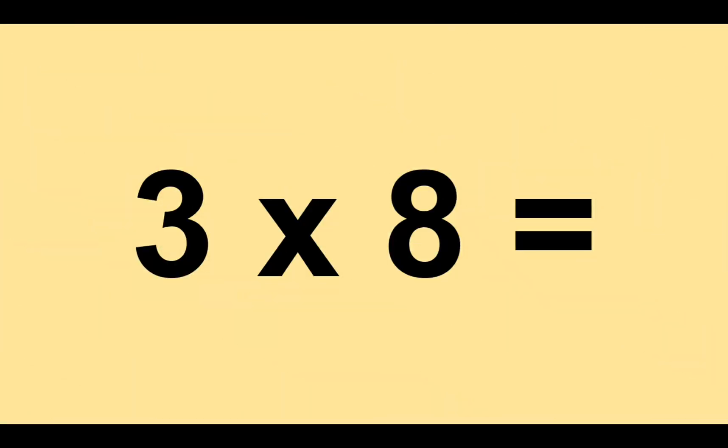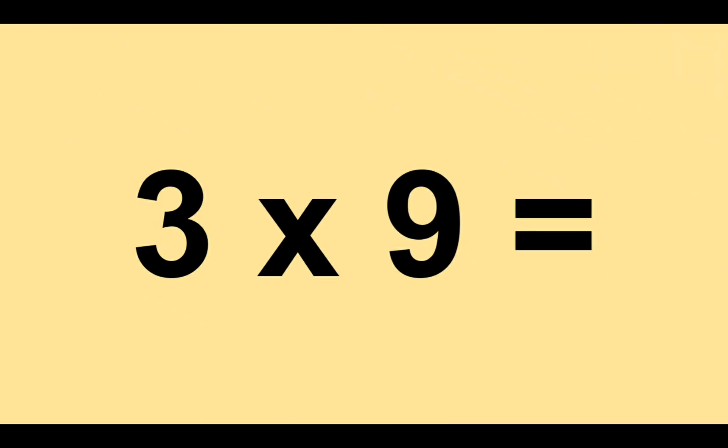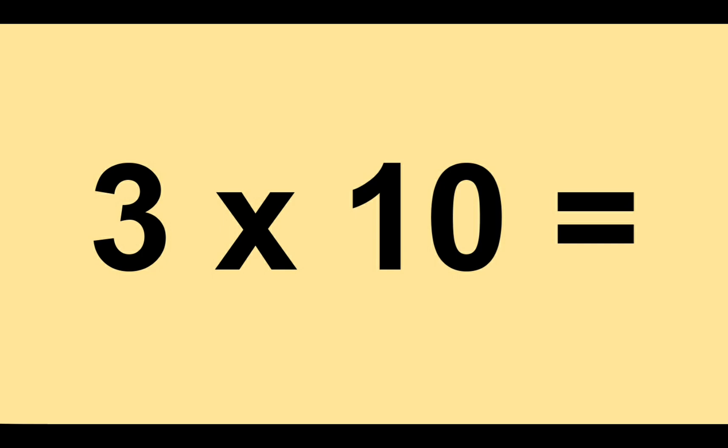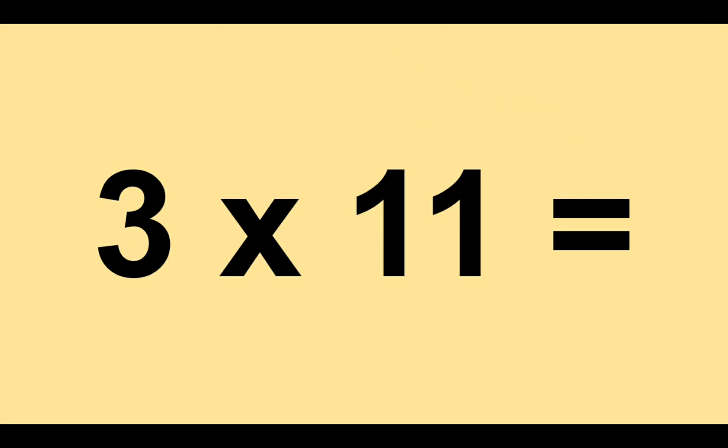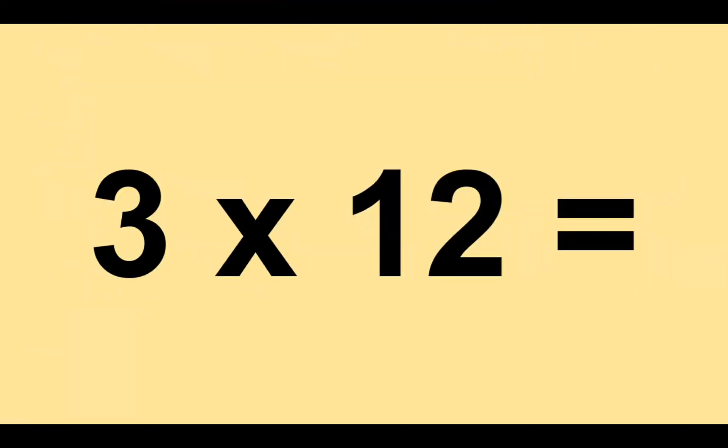Three times eight equals twenty-four. Three times nine equals twenty-seven. Three times ten equals thirty. Three times eleven equals thirty-three. Three times twelve equals thirty-six.